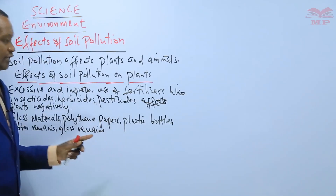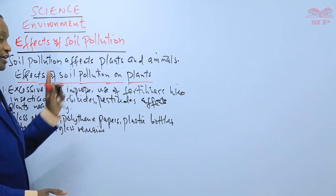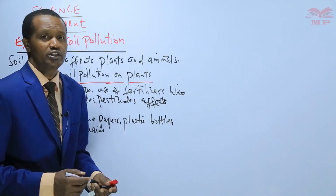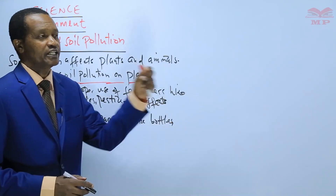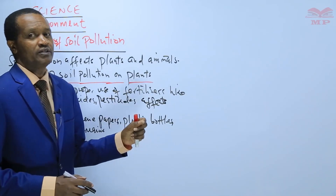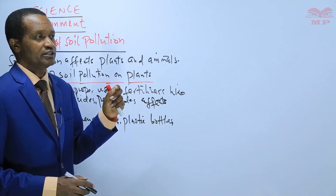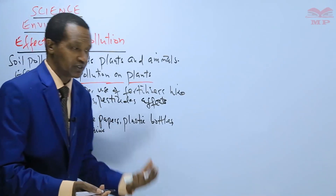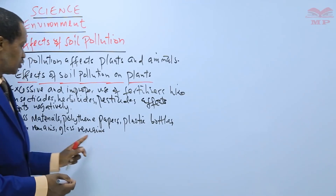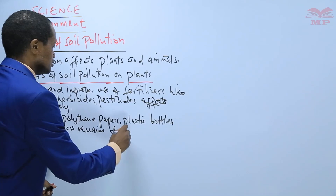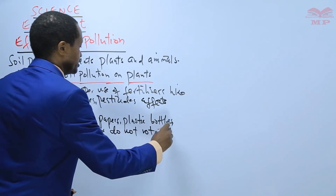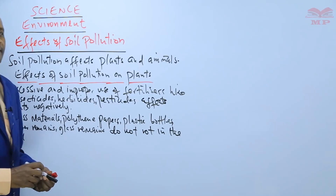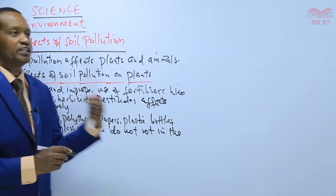These are solid waste materials emitted into the environment by companies, industries, or factories. All these materials do not rot when thrown into the soil; they stay in the soil for a very long period of time and sometimes obstruct the growth of plant roots. The plant roots are not able to grow because of these obstructions, and since they do not rot, they remain in the soil indefinitely.